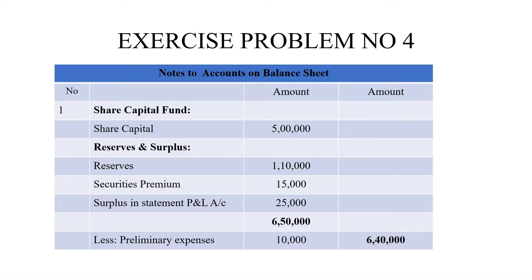Under Reserves and Surplus, reserve is 1 lakh 10,000 rupees and security premium is 15,000 rupees. That will add to surplus in the Statement of Profit and Loss account. Net profit is 25,000 rupees. Preliminary expenses are usually charged to the profit and loss account.